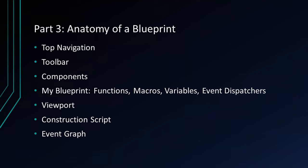Part 3: Anatomy of a Blueprint. In this section, we'll go over what's in a Blueprint and what you can expect when working with one. When you're in a Blueprint, you can see the top navigation, toolbar, components, My Blueprint section with functions, macros, variables, event dispatchers, the viewport, construction script, and event graph. Let's go over them.